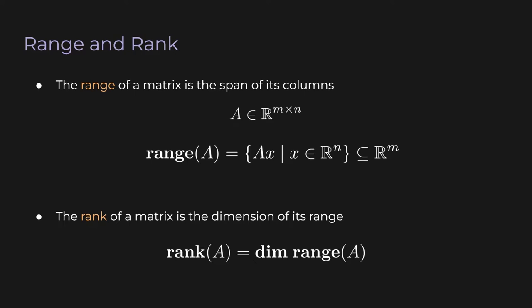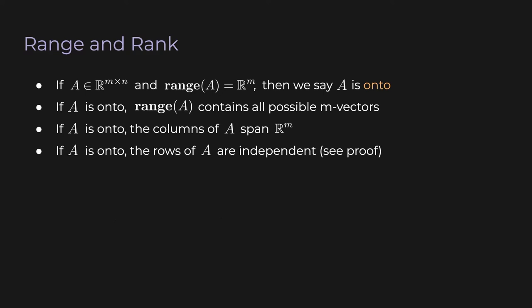If m is 3, then the rank could be 3, 2, 1, or even 0. Rank 1 means all the output vectors lie on a line, meaning they're all scalar multiples of the same vector. And rank 0 means A times x equals 0 for any x, so the range of A is just the zero vector, which is really just a point.